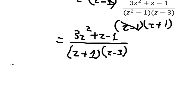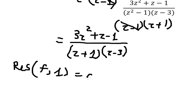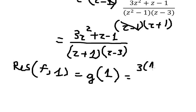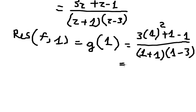Now we need to find the residue of f at z equals one. That means we need to find g(1), so we substitute z equals one and we get negative three over four.